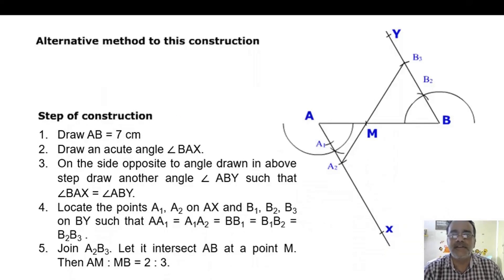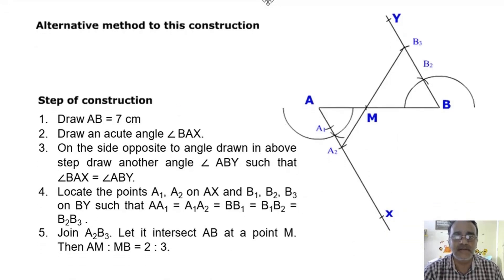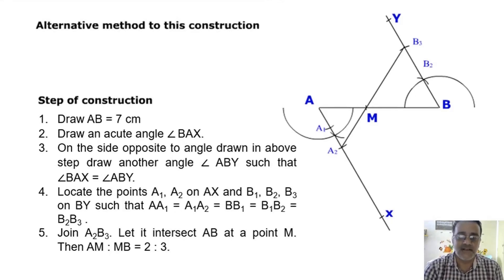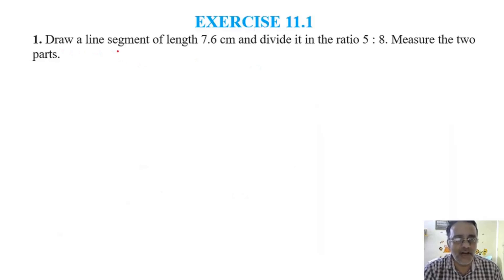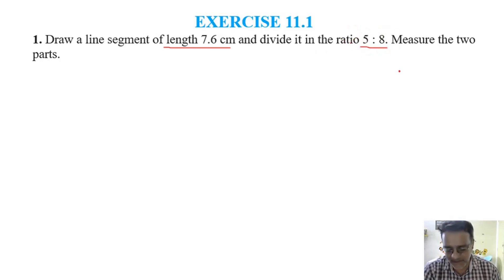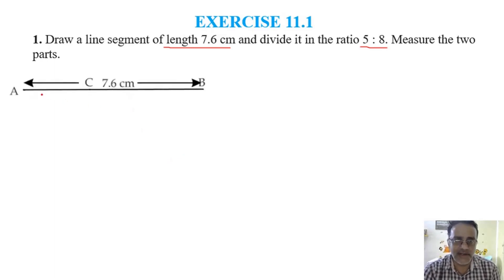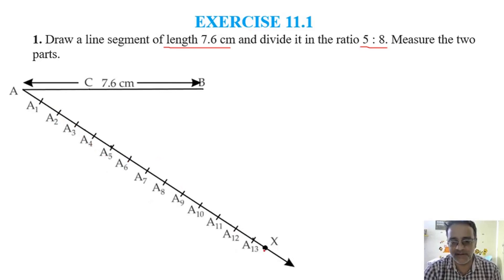Now we will continue with another example from Exercise 11.1. The first question: draw a line segment of length 7.6 cm, divide it in the ratio 5 is to 8. How many equal parts? 13. So first draw a line segment AB, then draw an acute angle, then divide into 13 equal parts - A1, A2, A3 up to A13.